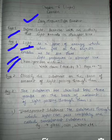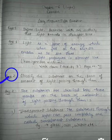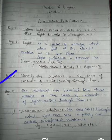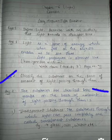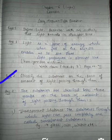Now students, the second question is: classify the substances on the basis of amount of light passing through them. Students, we have to classify the substances on the basis of light passing through them. The substances are classified into three groups.